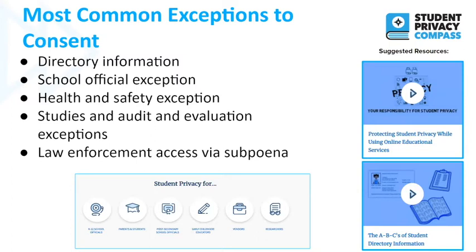You can click in the downloaded slides, in the list of resources, and in the comments if you're watching this video. The health and safety exception is for emergencies. If there is a pandemic, for example, or a serious and imminent threat to the safety of a particular student, this exception allows schools to share information to deal with that threat — such as finding where students are after a hurricane and sharing information with public health authorities.